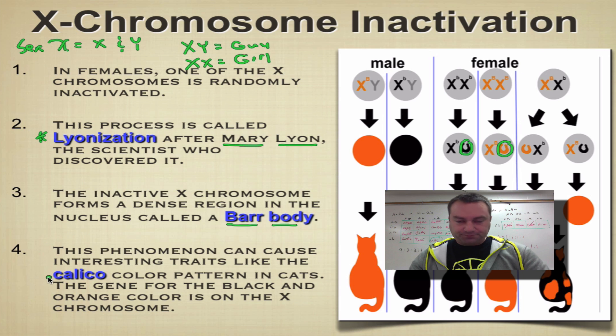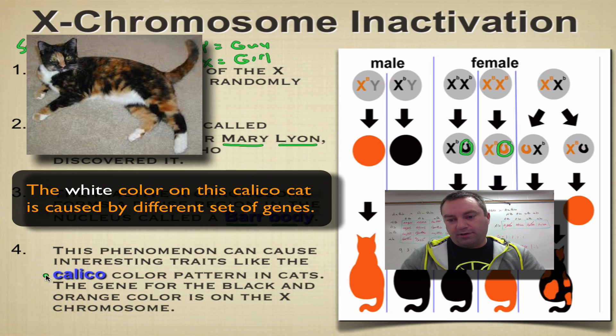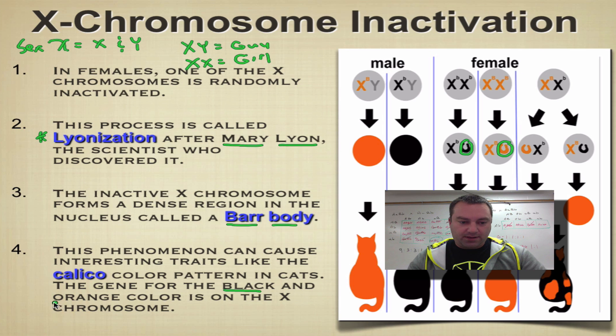Calico cats are the ones who have the orange fur and black fur kind of mixed in together. The fur color on cats, especially for the black color and the orange color, they're found on the X chromosome. So you need to think of these as an X-linked trait because they're found on the X chromosome.